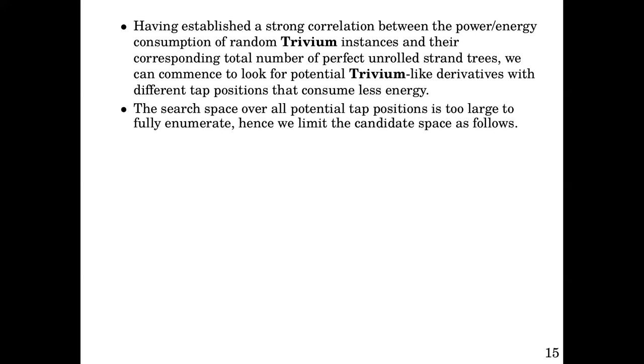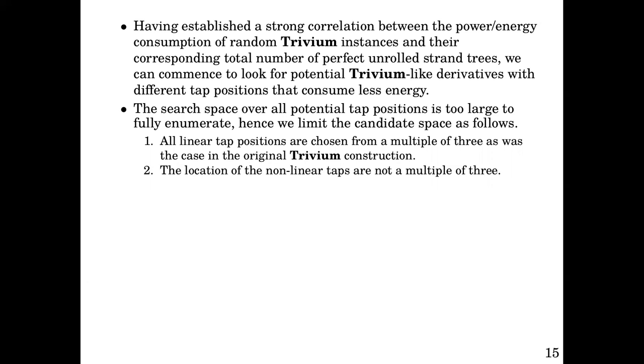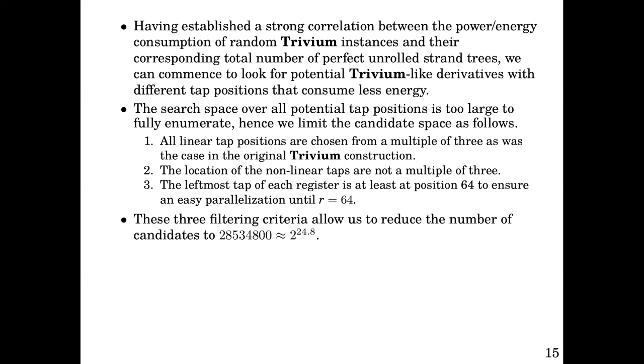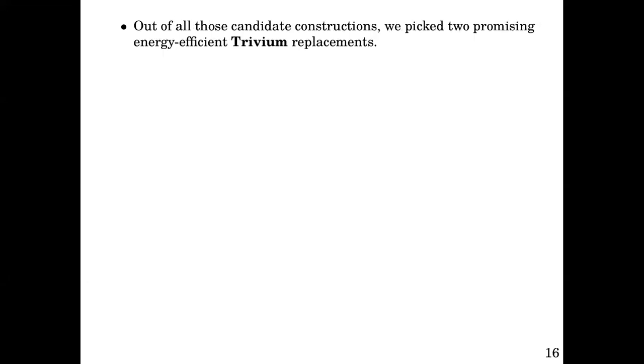The search space over all potential tab positions is too large to fully enumerate, hence we limit the candidate space as follows. All linear tab positions are chosen from a multiple of three, as was the case in the original trivium construction. The location of the nonlinear tabs are not a multiple of three. The leftmost tab of each register is at least at position 64 to ensure easy parallelization until r equals 64. These three filtering criteria allow us to reduce the number of candidates to roughly 2 to the power 25. Out of all those potential candidate constructions, we picked two promising energy efficient trivium replacements.